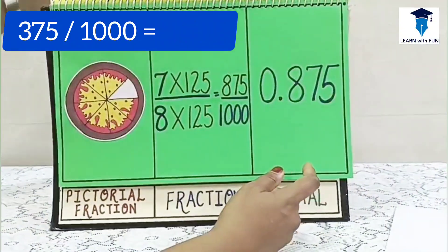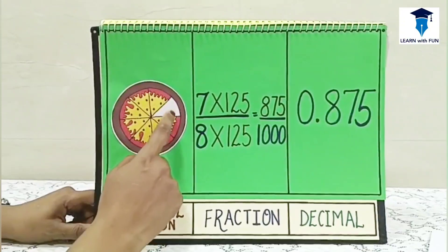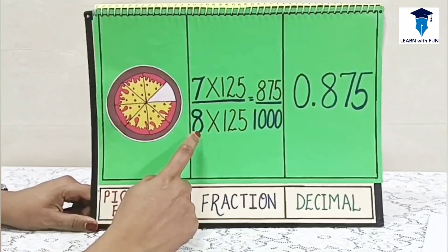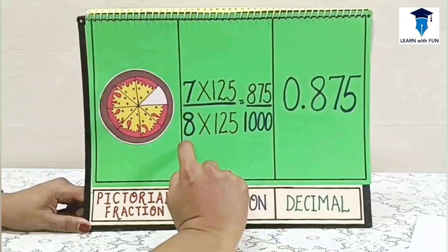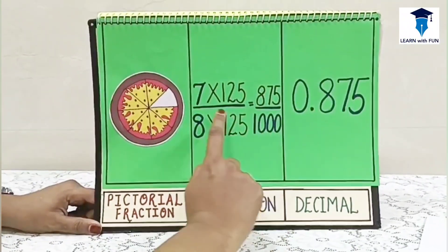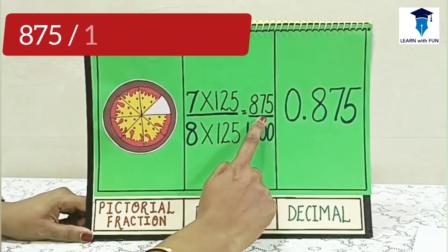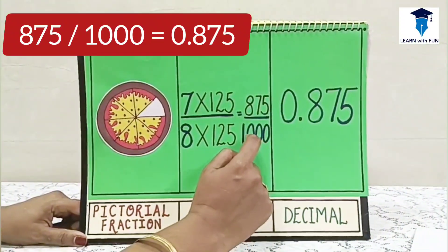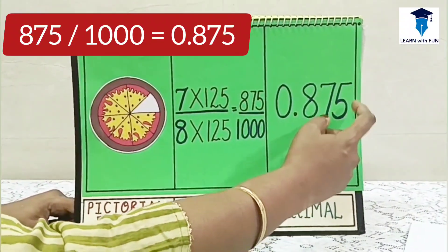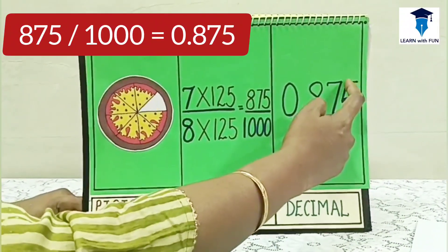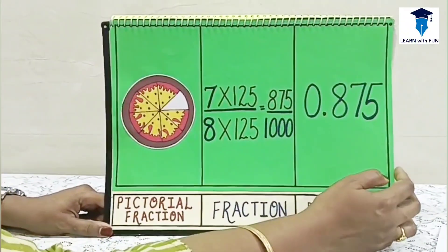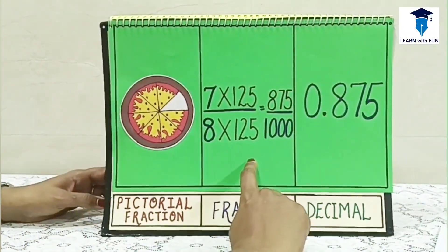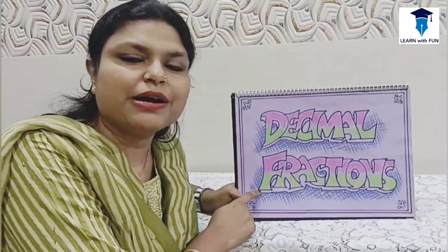The last example: out of 8 pieces, 1 piece is eaten and 7 are remaining, so the fraction is 7 upon 8. As we understood, 8 × 125 = 1000, so 7 × 125 = 875, giving equivalent fraction 875 upon 1000. Since there are 3 zeros at the denominator's place, the decimal point shifts 3 places from the right, giving the answer 0.875. I hope the concept of decimal fraction is clear with the help of the pizza model, and you will now be able to convert a fraction into decimal and a decimal into fraction. See you in the next video.